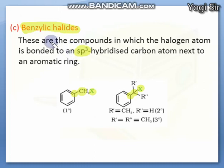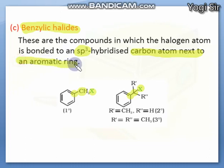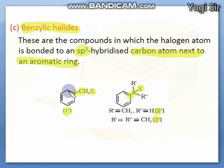The third subtype is benzylic halide — here the halogen is again attached compulsorily to an sp3 hybrid carbon, and that carbon atom is directly linked to a benzene ring. So on the aromatic ring there is a carbon atom and on that carbon the halogen is attached. These are known as benzylic halides. Like alkyl halides, benzylic halides can also have subtypes: primary, secondary, and tertiary, depending on how many alkyl or aryl groups are on the central carbon atom.